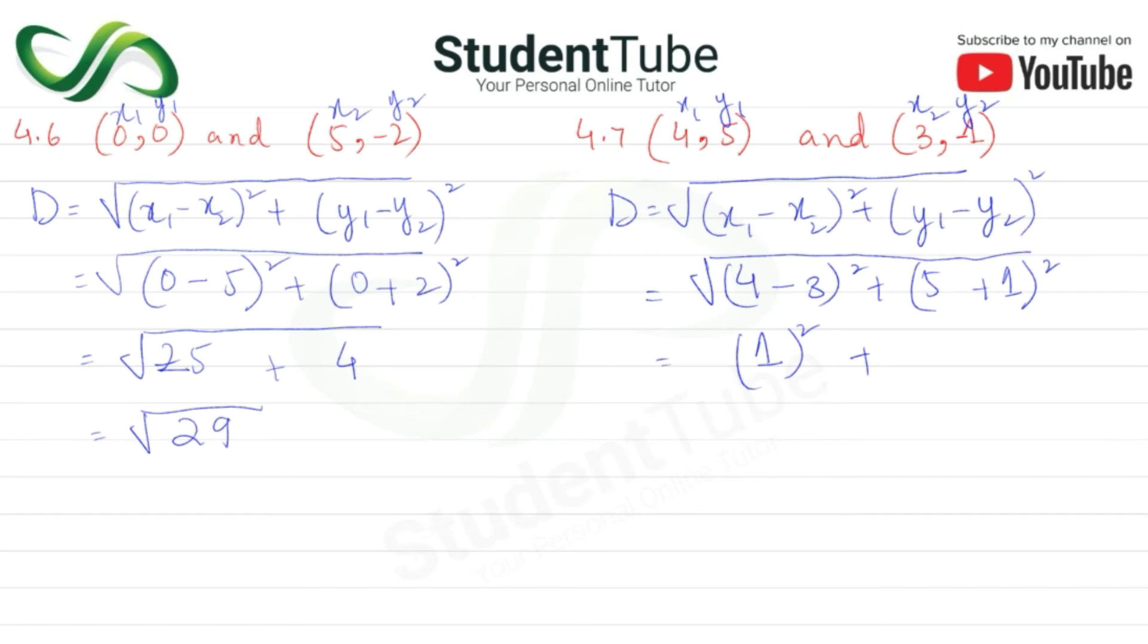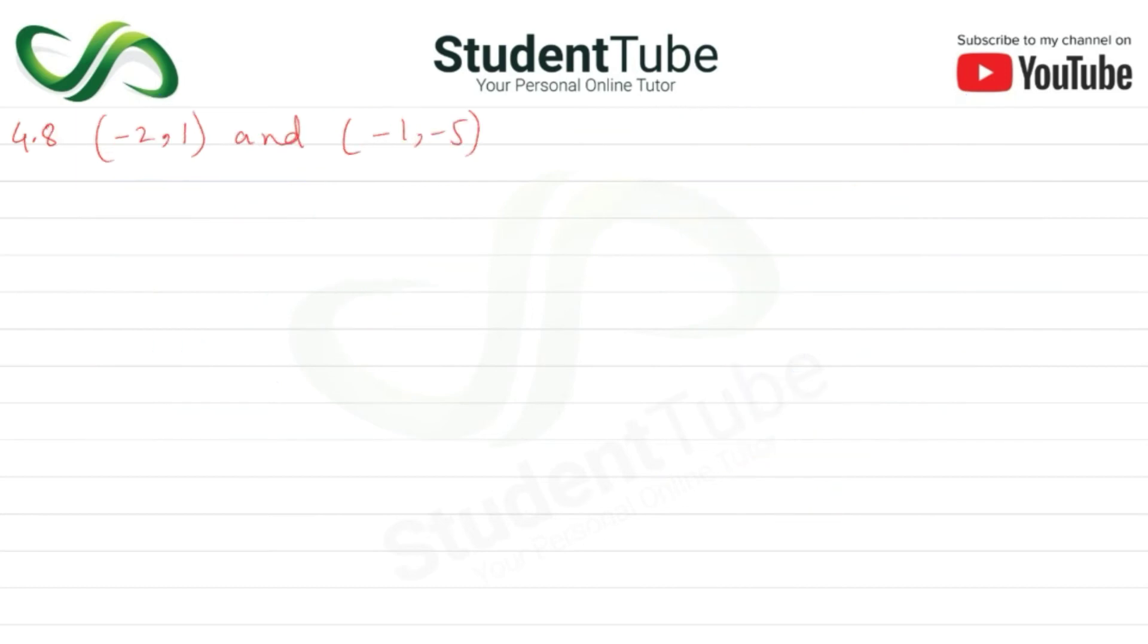So (4-3)² gives us 1², which is 1, plus (5-1)² equals 6². That's 36. Adding them: 1 + 36 = 37. So the answer is √37.